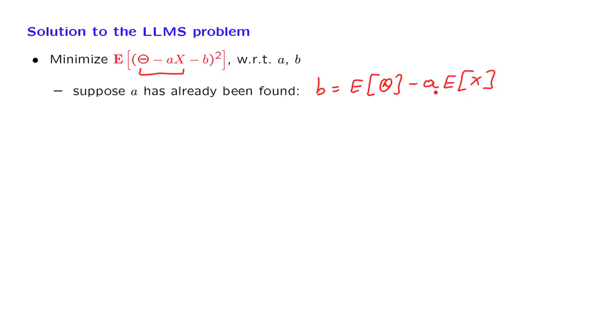So if we know a, this is how b should be chosen. Let us now move on to the choice of a. Since we know what b should be equal to, we can rewrite this expression that we're trying to minimize by substituting our choice of b, which is the expected value of theta minus ax.